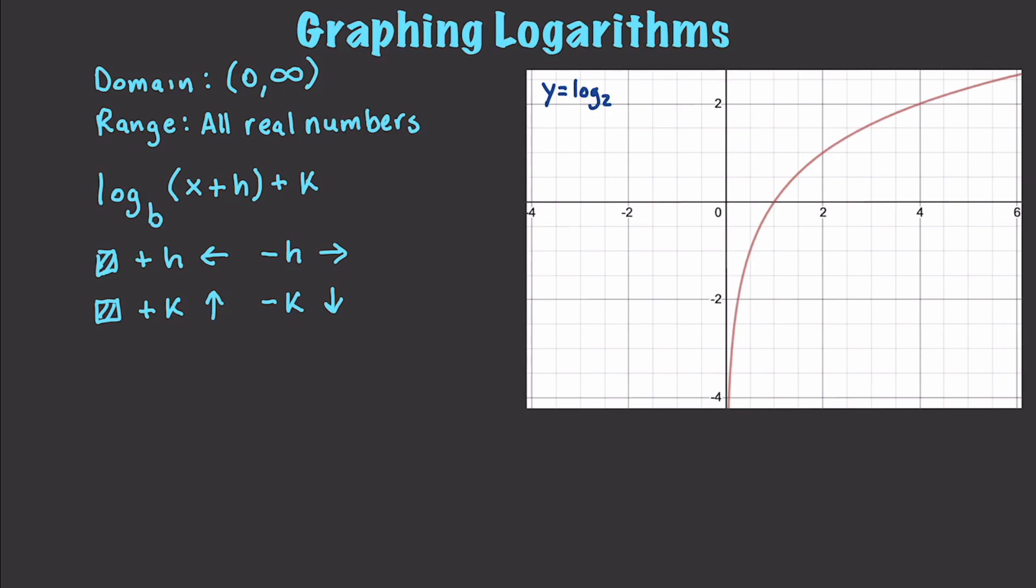And if we come in here and try to figure out how to shift, let's try a more complex type of problem here. Let's say we have something like y is equal to base 2 log x plus 3 minus 2. Well, what are we going to do here? Well, we have to look at our h. It's a plus value. That means we're going to be shifting to the left by 3.